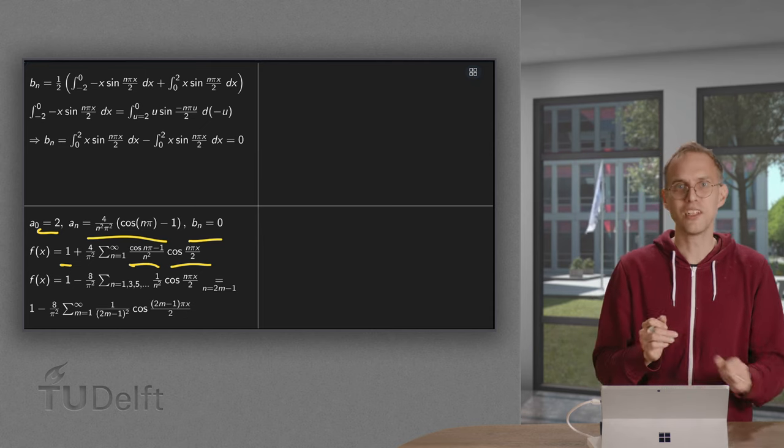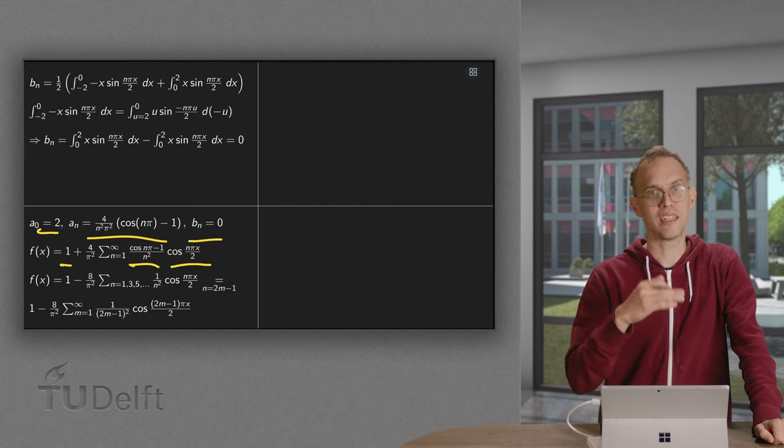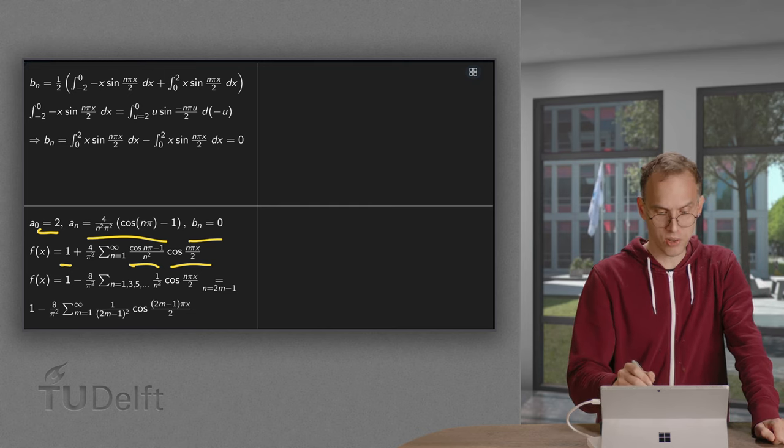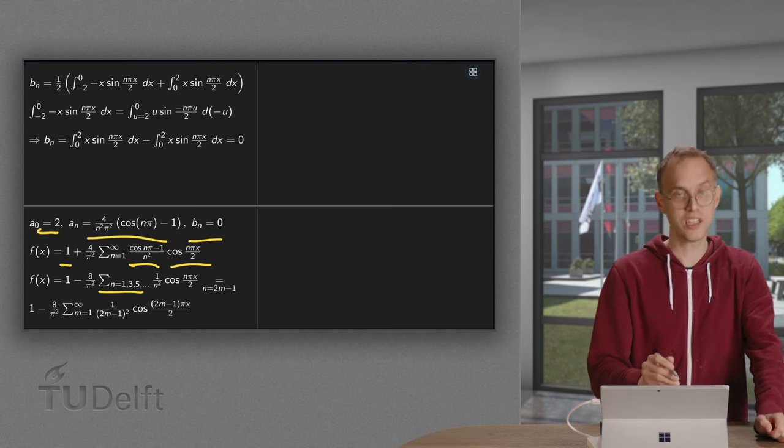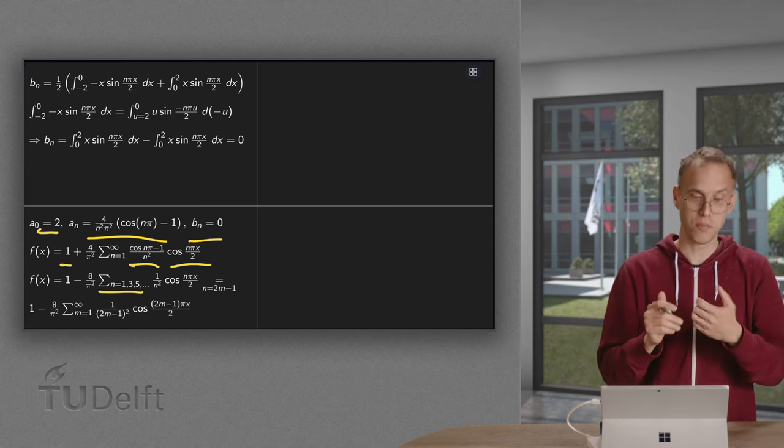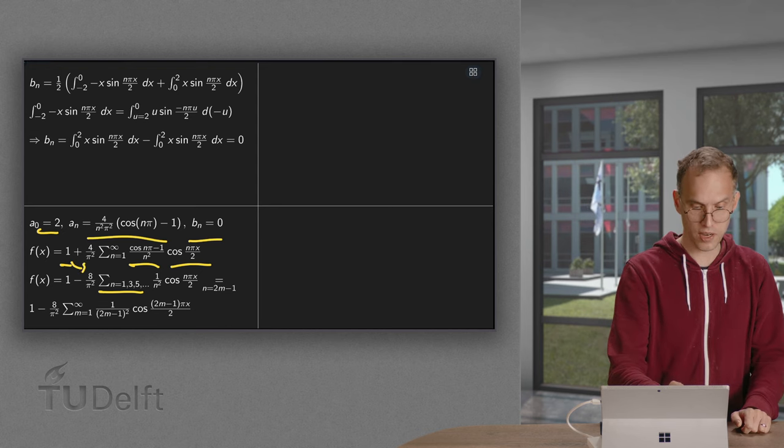Often it's rewritten a bit using the fact that only the odd terms contribute. So what you can also do is say, okay, I only sum over the odd terms like this. And then the cosine n pi minus 1 becomes a minus 2. So we get the minus 8 over there.